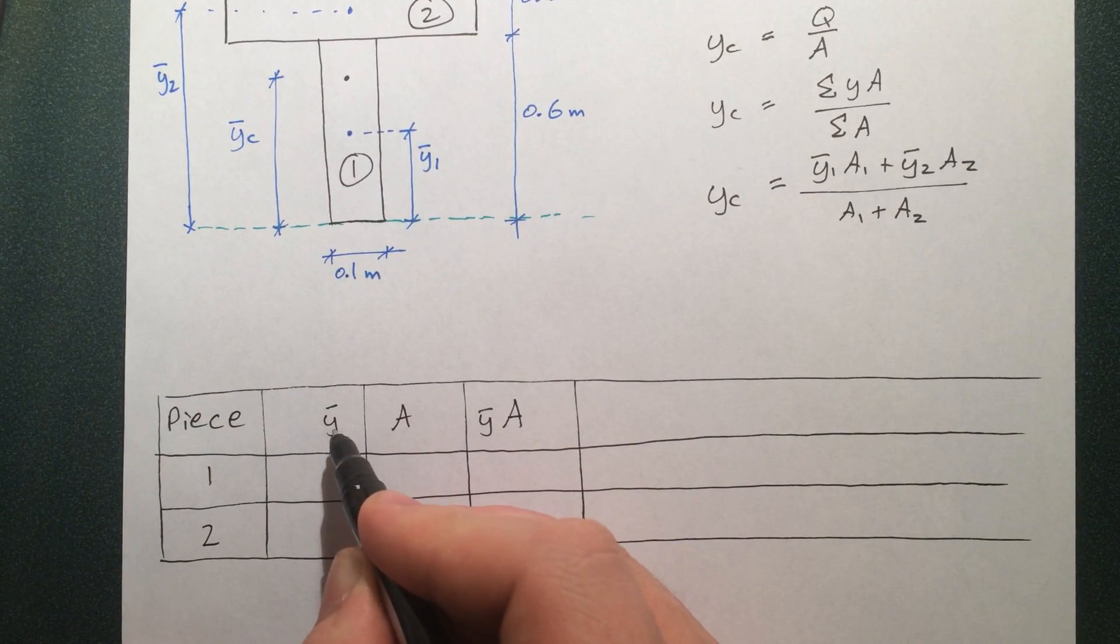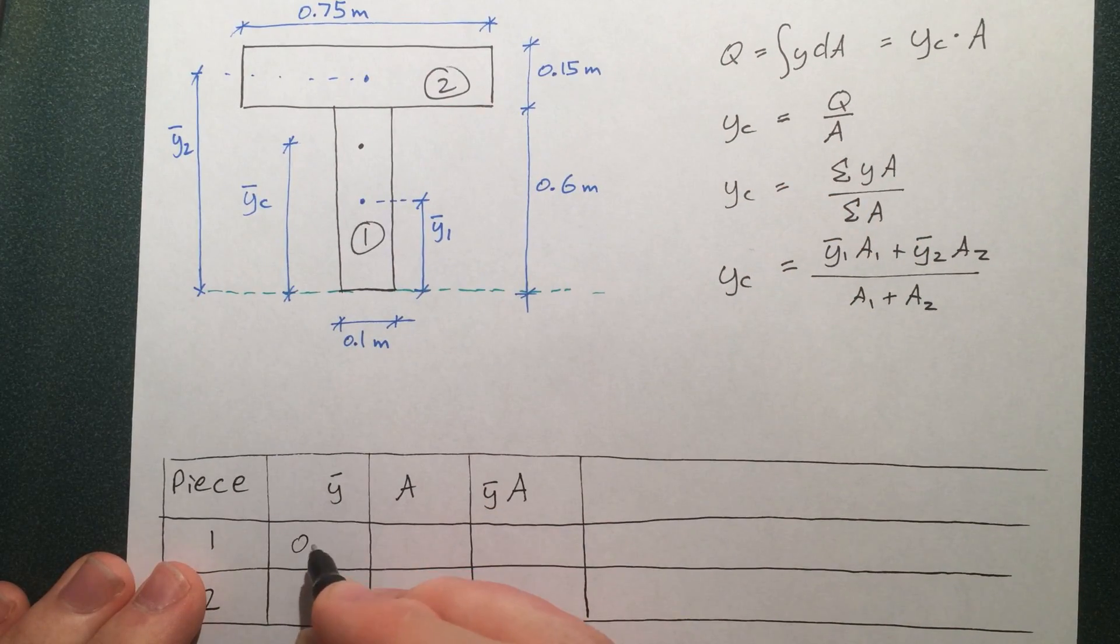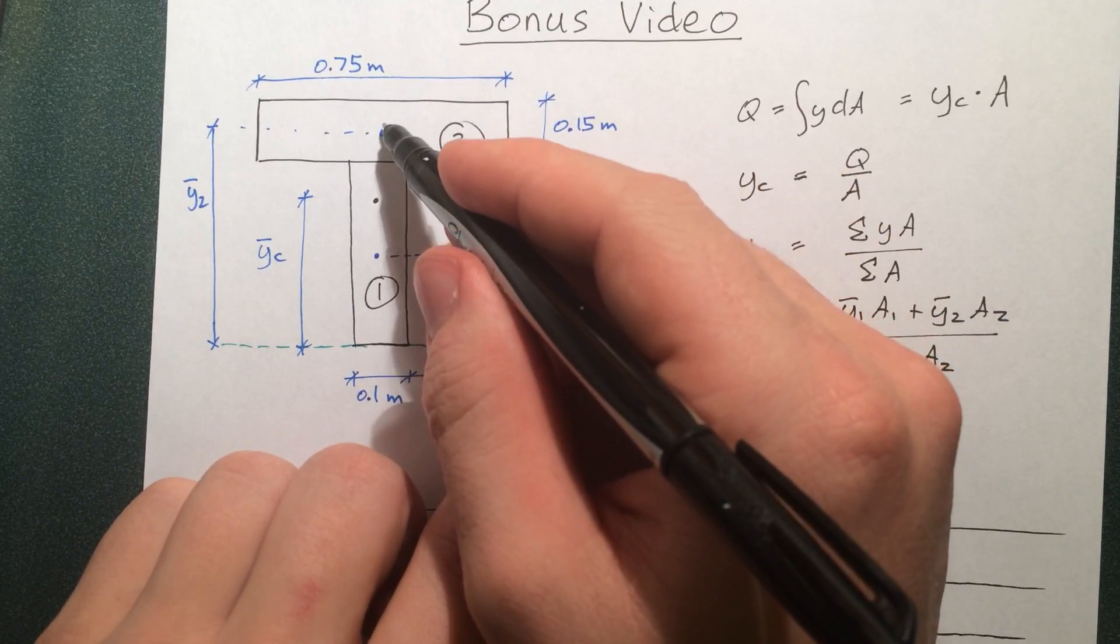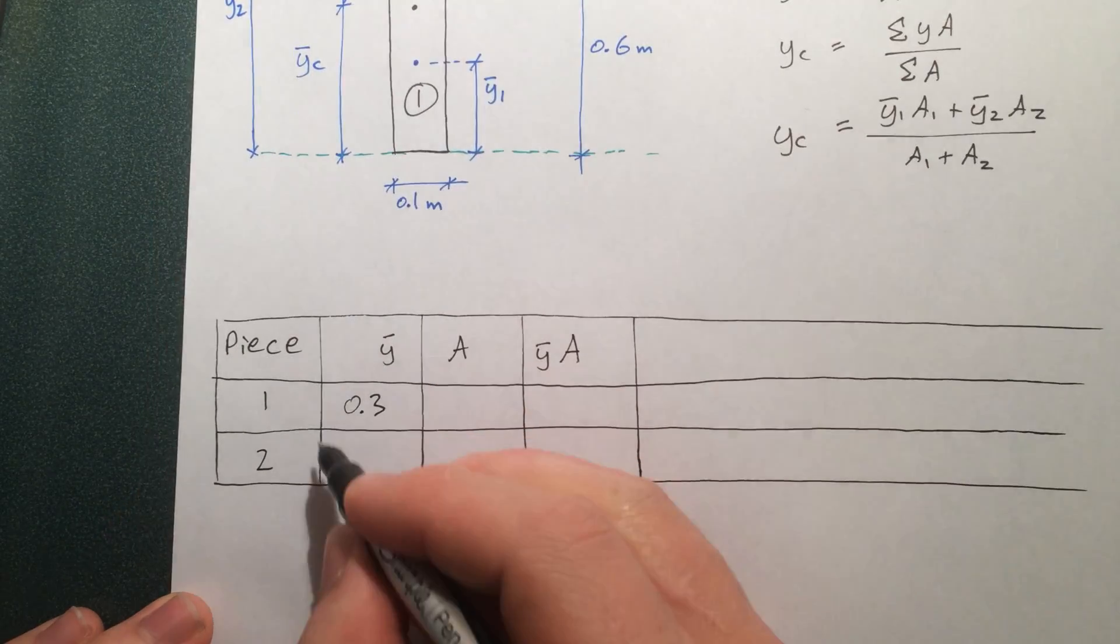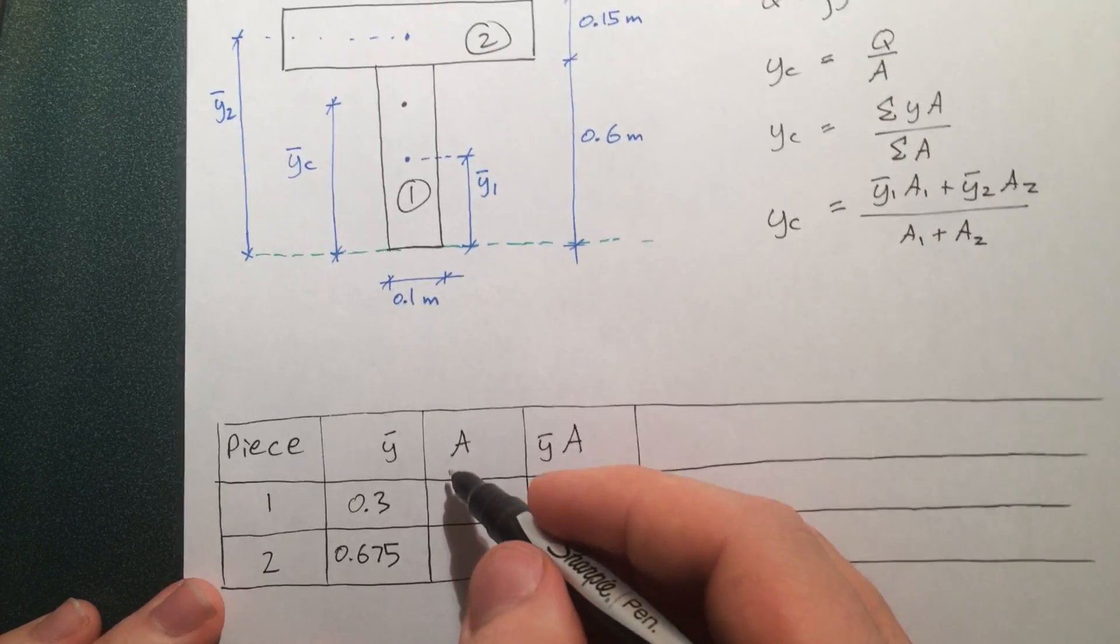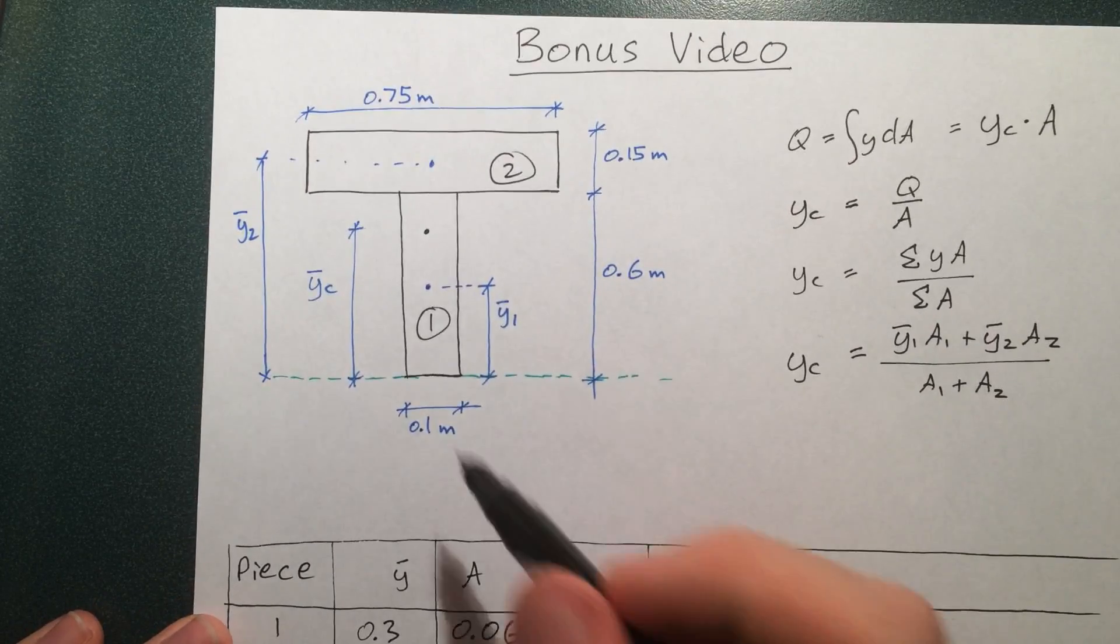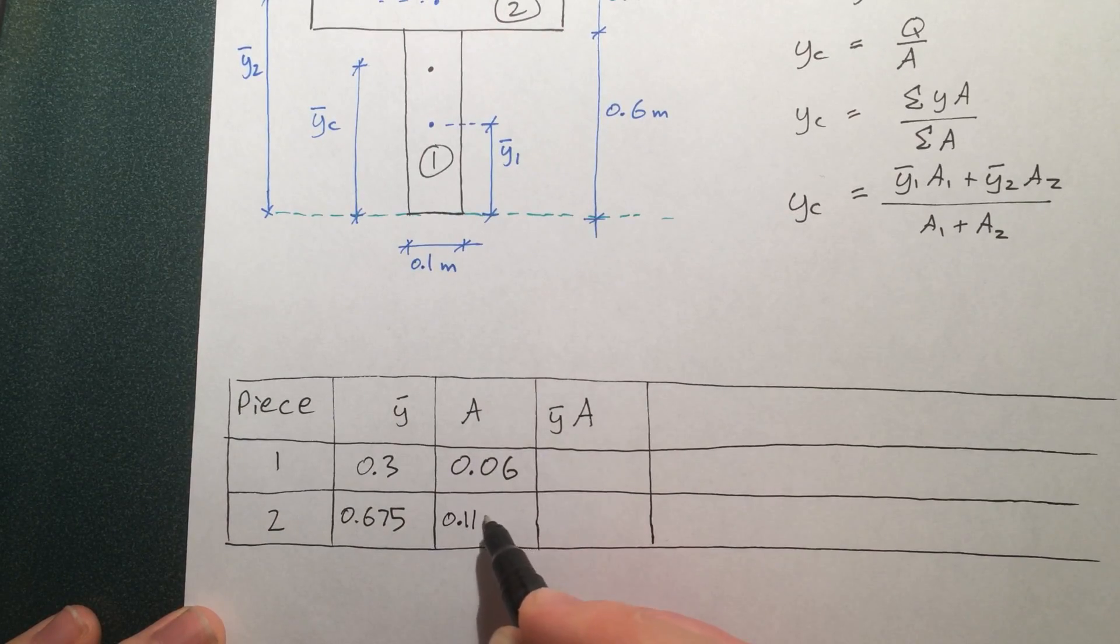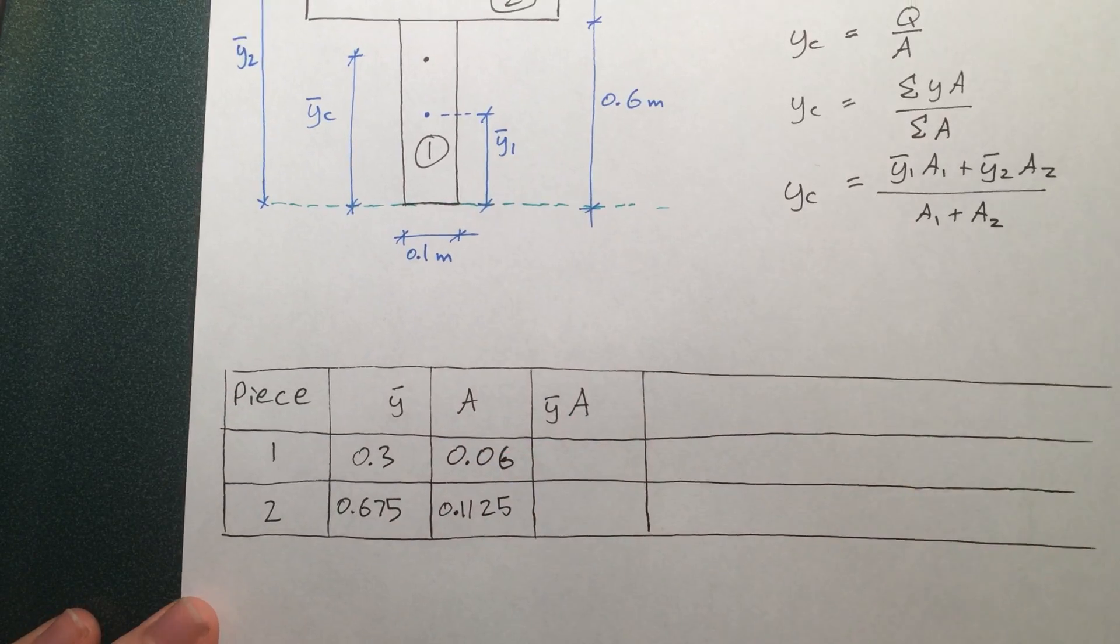y-bar to the centroid of piece one, that's half of 0.6, so 0.3 meters. y-bar to piece two, that's 0.6 plus half of this distance. We know the centroid of any square or rectangular cross-section is right in the center of it. Turns out to be 0.675. The area of piece one is 0.1 times 0.6. The area of piece two is the top times this little bit here. I'm just assuming we'll keep units consistent—meters squared and meters.